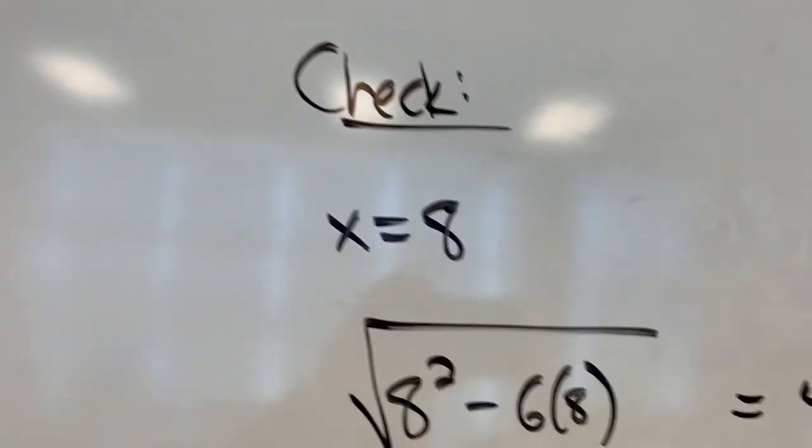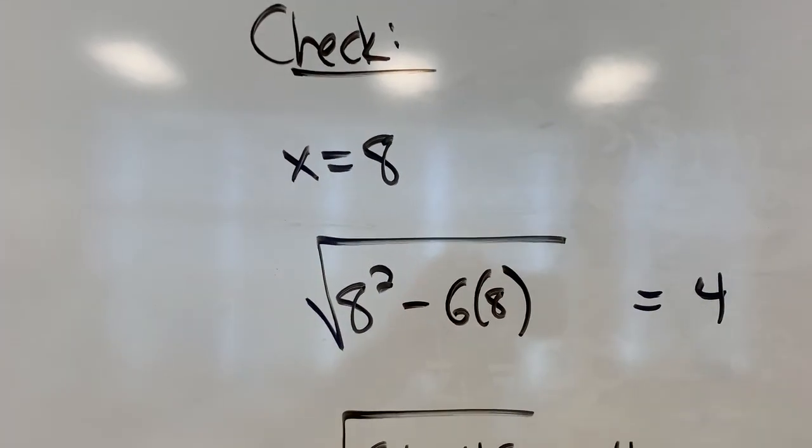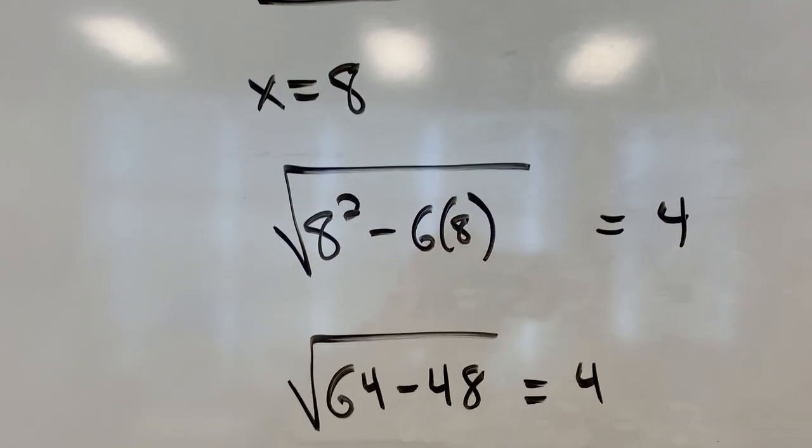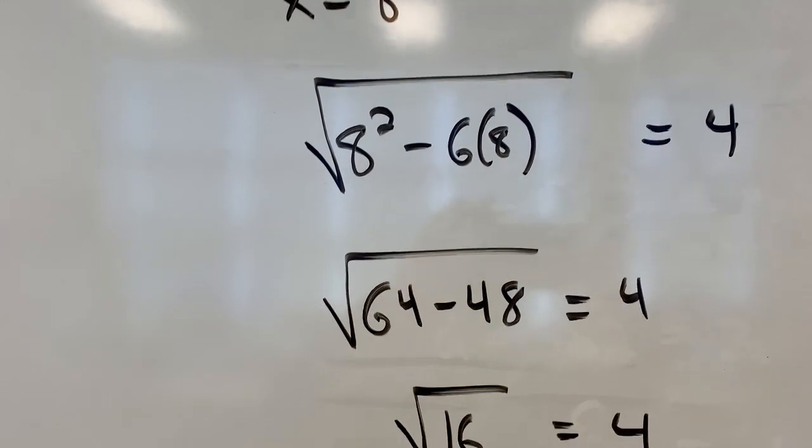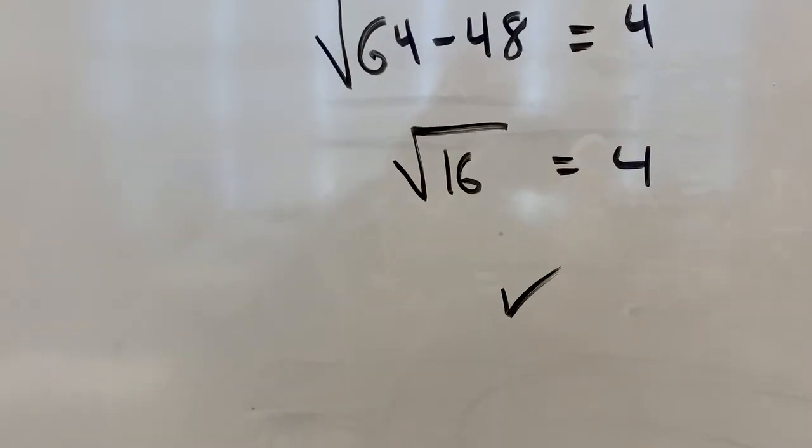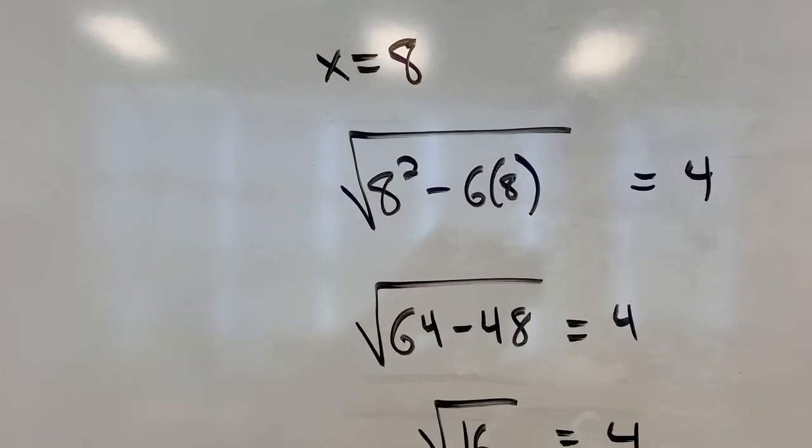So, I'm going to check 8. x equals 8. I put it back in there. 8 squared minus 6 times 8. Expand. Follow my BEDMAS. Square root of 16 does equal 4. I'm happy with that answer. x equals 8 does satisfy the equation.